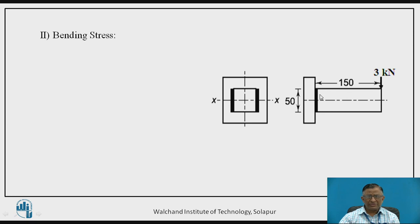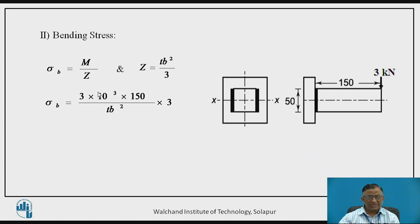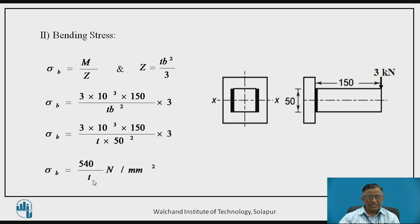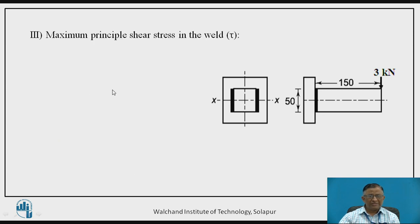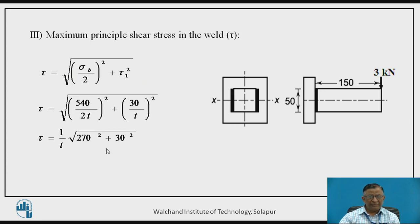The second effect is the bending moment, which causes bending stress. Bending stress sigma_B = M / Z, and the Z value for this section from the standard table is T·B² / 3, where T is the throat size and B is the weld length of 50 mm. Substituting, bending stress is obtained as 540 / T N/mm². With tau_1 and sigma_B calculated, we then calculate the maximum principal shear stress tau using sigma_B and tau_1 in the equation, giving a resultant shear stress of 271.66 / T N/mm².